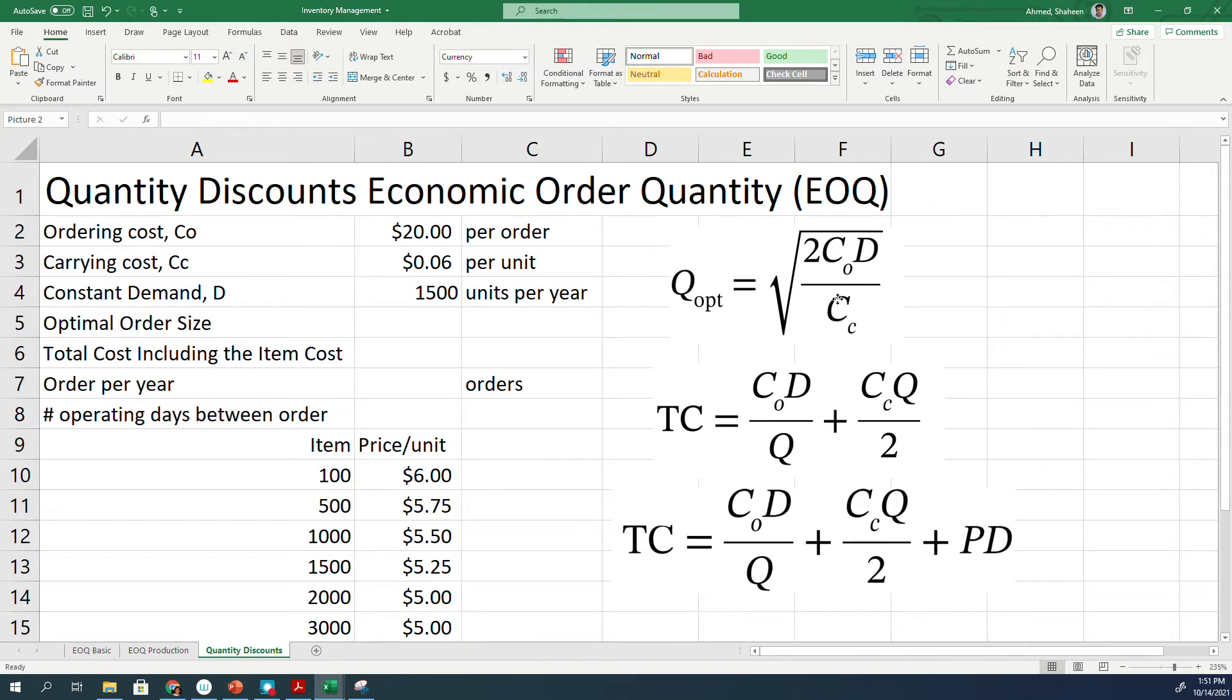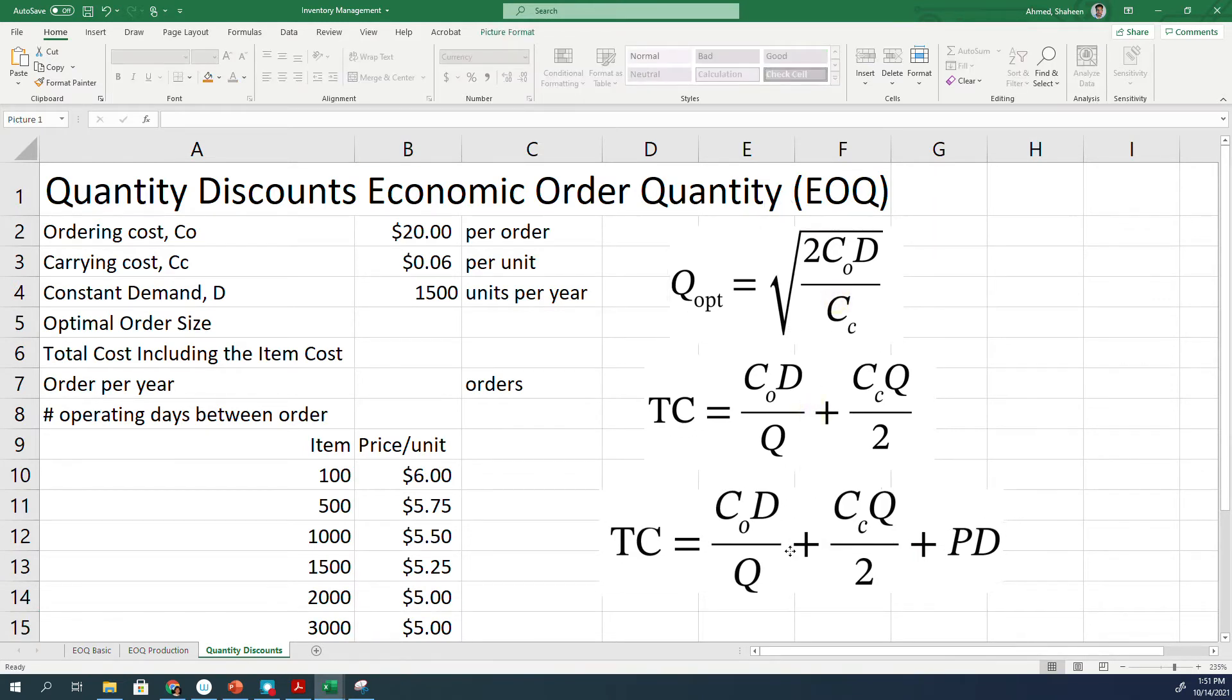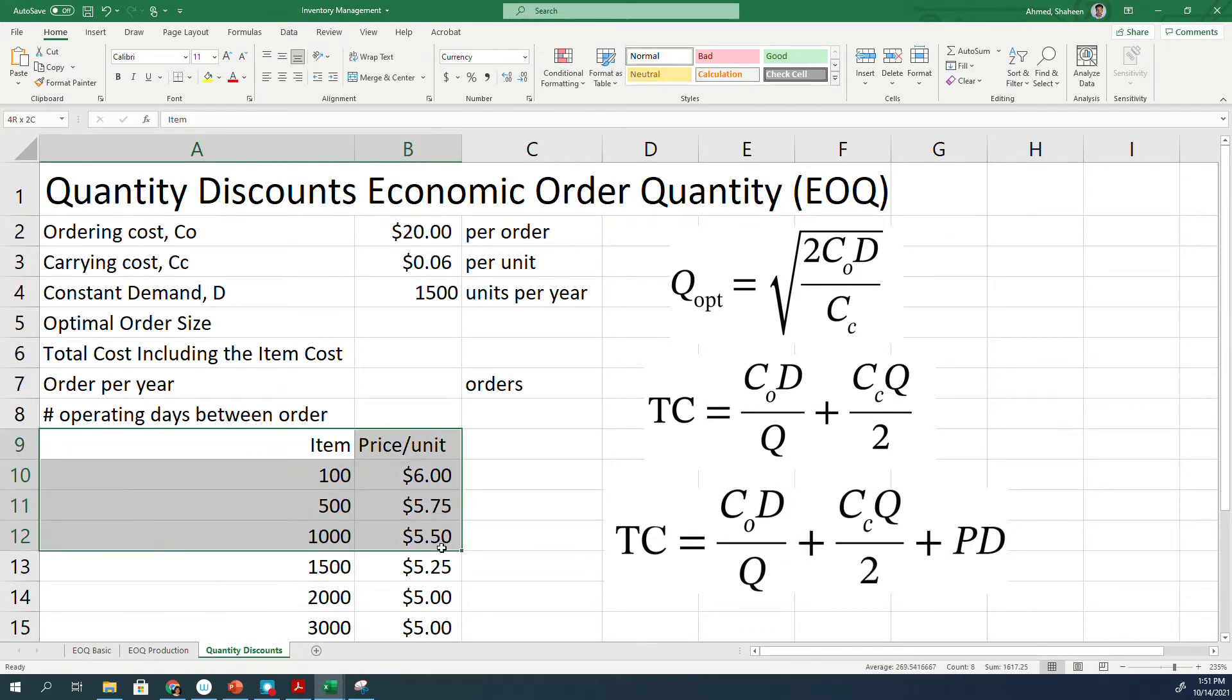We have seen how to produce these equations. The only thing added to the total cost this time is the price of the item, so that we can consider this discounted situation in our decision.